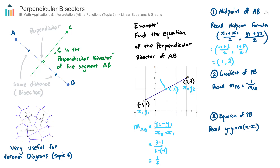Now using that, the gradient of the perpendicular bisector equals the negative reciprocal of 1/2, which is −1/(1/2) = −2. So the gradient of the perpendicular bisector is −2, and we know it passes through coordinate (1, 2). We can now use the point-slope form of a linear equation to find the equation of this perpendicular bisector.